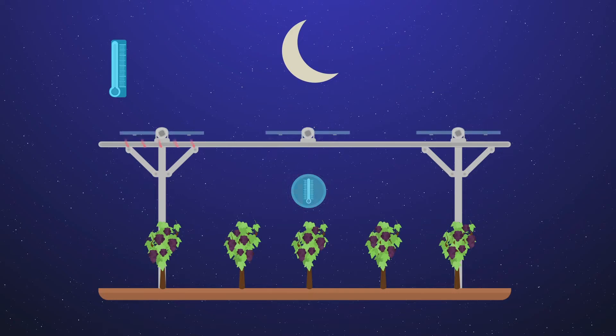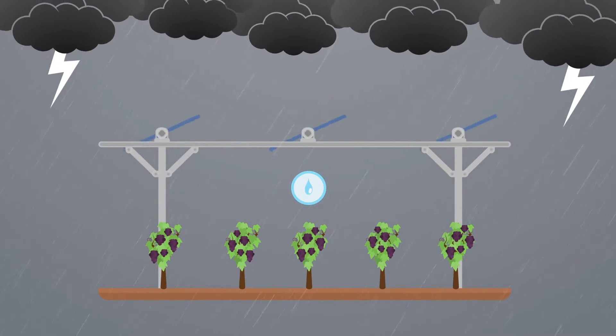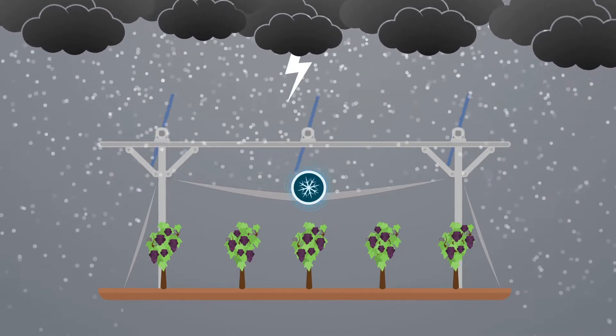The system also protects the plant from spring frost, adapts to rain and enables the use of protective nets against hail, pests or wind.